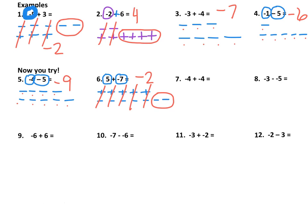And in number 7 here, we have 4 negatives and we have 4 negatives. Nothing cancels, so if we count up what we have, we end up with negative 8.